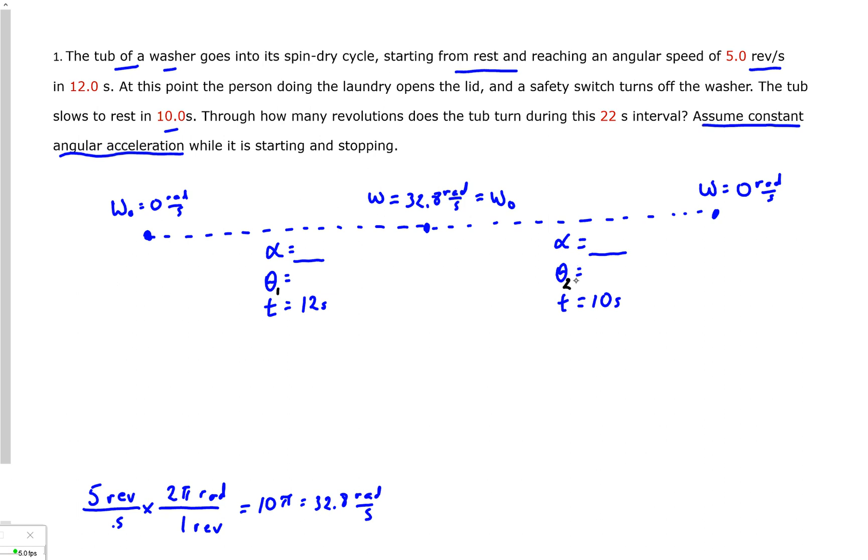Now we could easily do this problem two ways. One way we could use our angular acceleration equation. It would be very easy for us to find angular acceleration for both part one and part two, and then use that to find angular position or angular displacement. I'm going to go a different route. It's actually the easiest way to work this problem. Usually, whenever I'm given initial and final velocities, if you want to find average velocity, a very easy thing is just to add them up, divide by two.